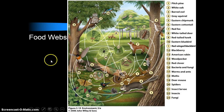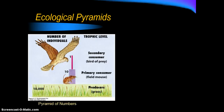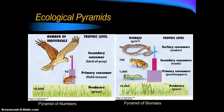One way to look at the flow of energy in an ecosystem is through an ecological pyramid. There are two types: pyramids of numbers, which show the literal number of each type of organism at each level, and pyramids of biomass, which compare the actual mass. For biomass, the units are grams per square meter — you square off a meter, clear out everything in it, and literally weigh it to find the biomass present.